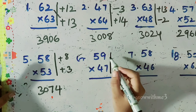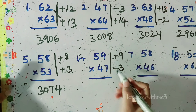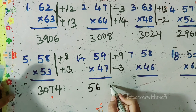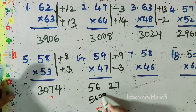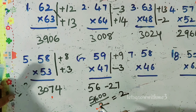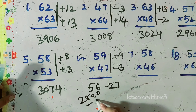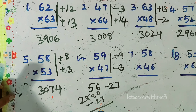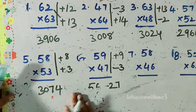Next example: plus 9 and minus 3. Do the cross subtraction, giving 56, and 9 times 3 is 27 — a minus 27 — so we need subtraction. Convert 56 to base 50: 5600 over 2 — 2 twos are 4, 8 twos are 16 — giving 2800. Subtract 27 from 2800: because of borrow, the answer is 2773.